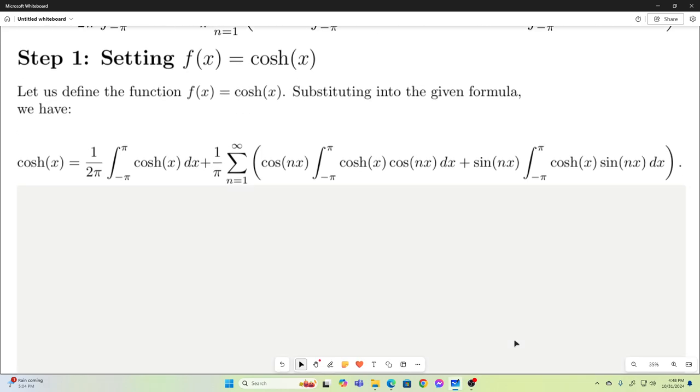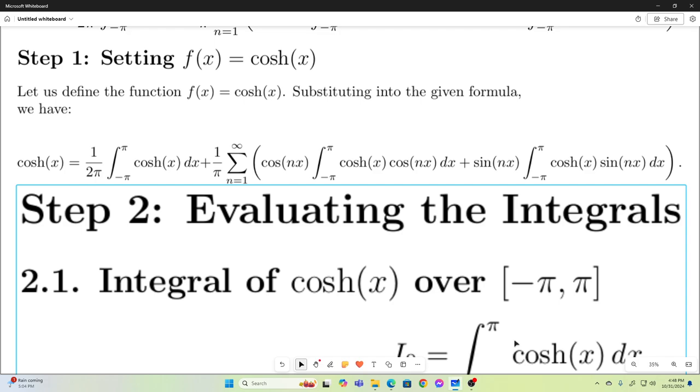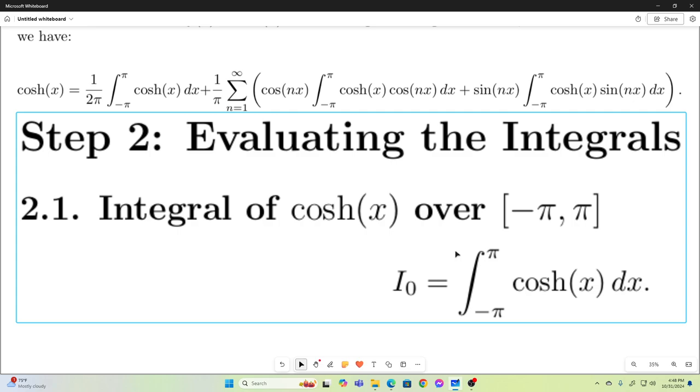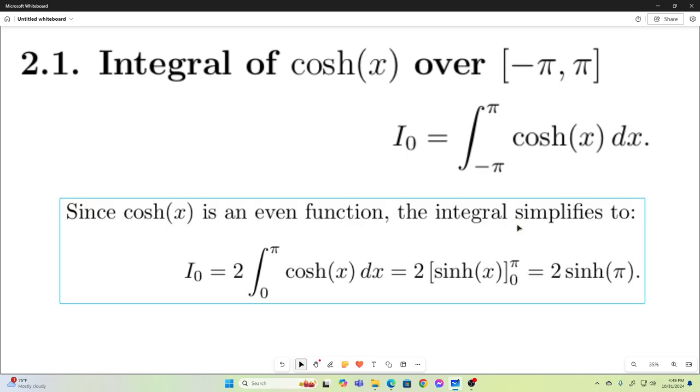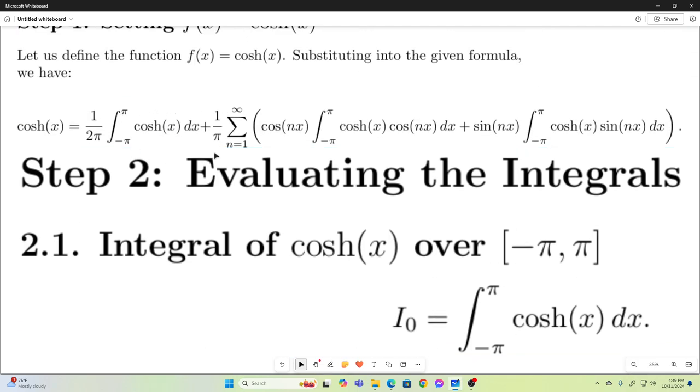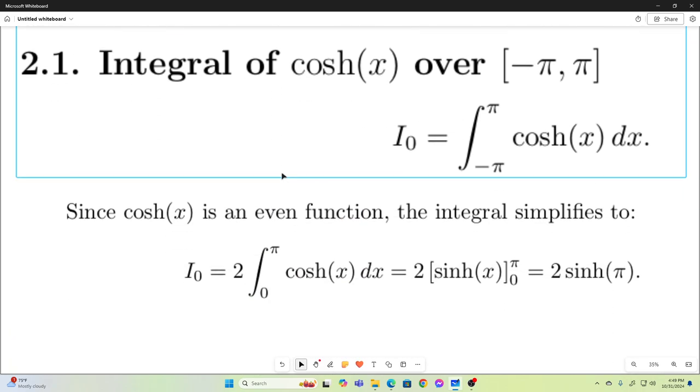So basically we're just replacing f(x) with cosh(x), or hyperbolic cosine of x, anywhere we see an f(x). And then we get this. So now what do we do? We have to evaluate the integrals. And we have a bunch of the integrals here. Let's just start with this one. So the integral of the hyperbolic cosine x over negative pi to pi, we'll label that I sub zero.